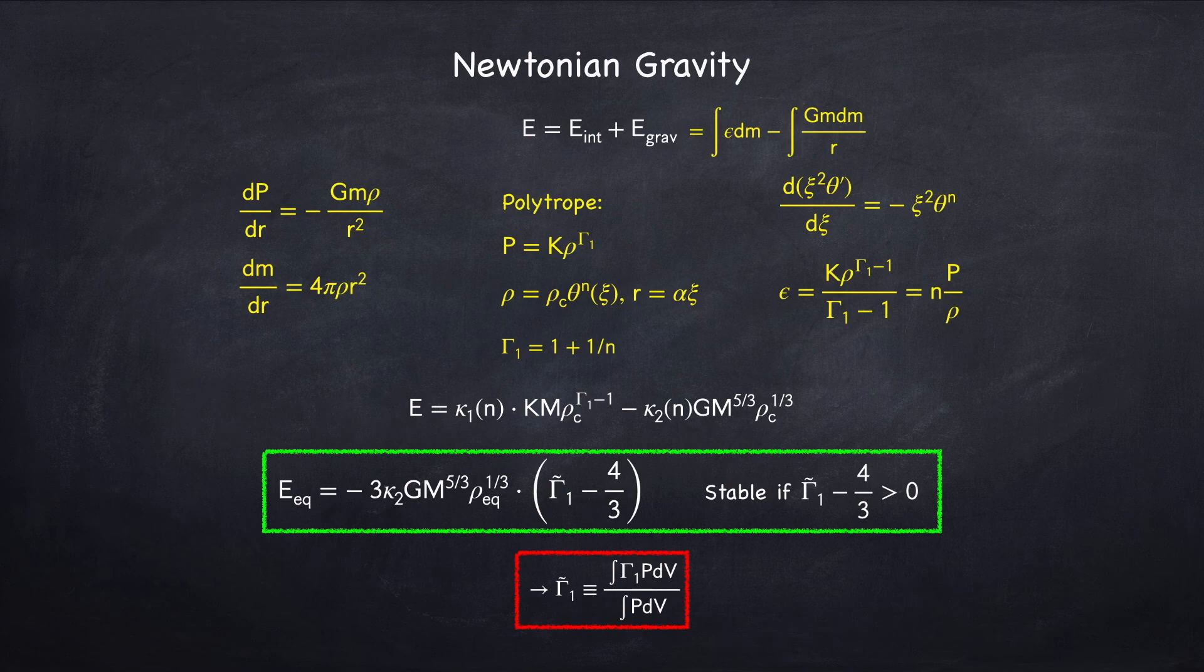We showed in stellar physics 2c that gamma 1 is always between 4 thirds and 5 thirds, and so under Newtonian gravity stars are always stable.